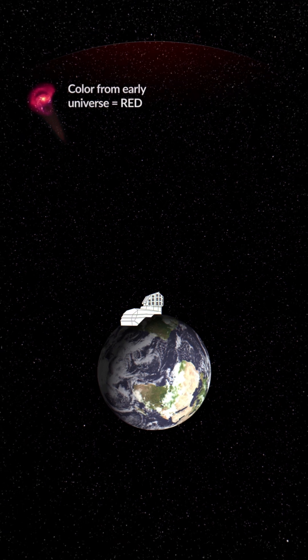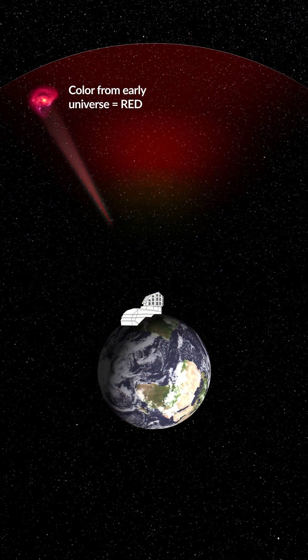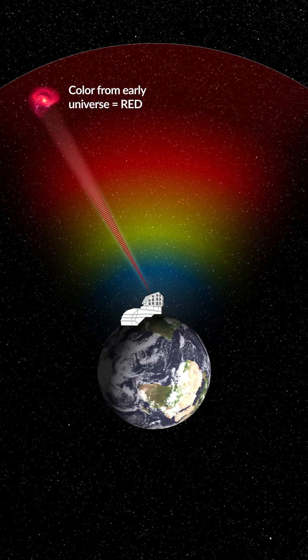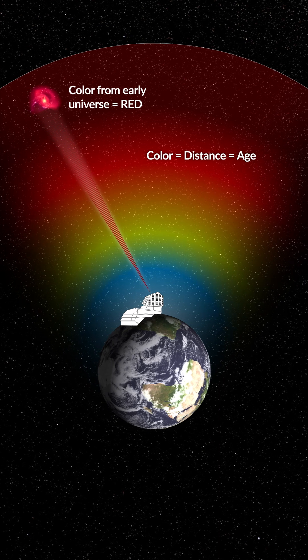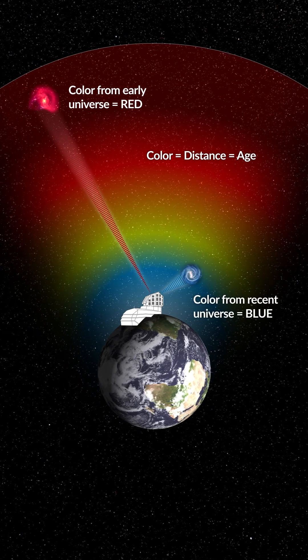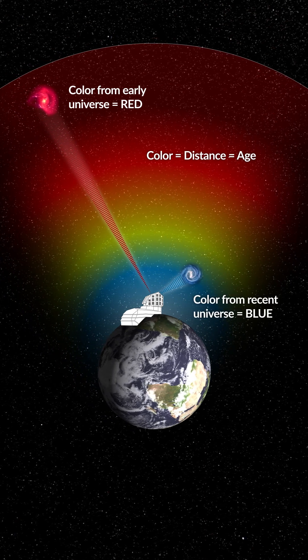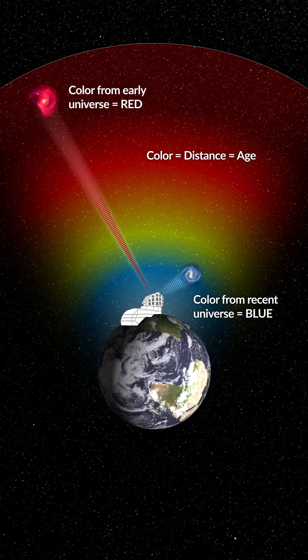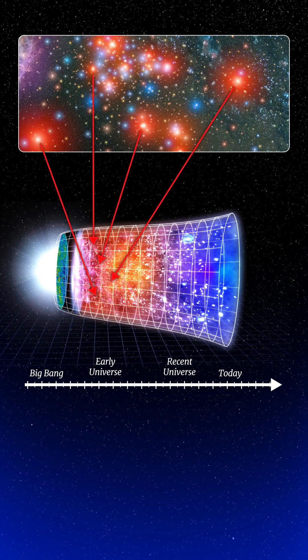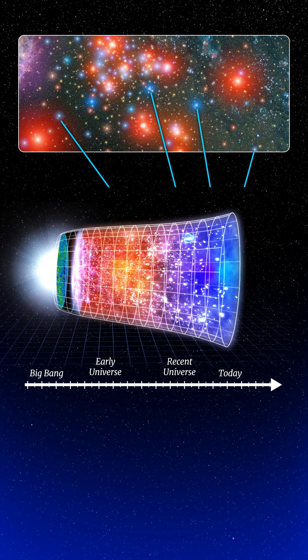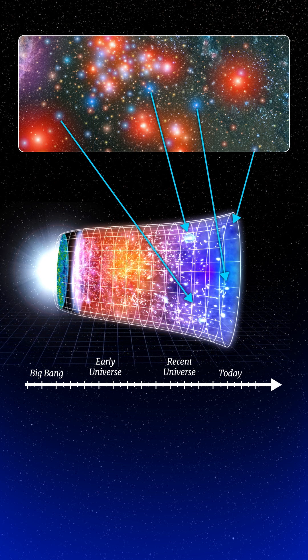This distinction in color gives us a distinction in distance, and also a distinction in age. The objects which are far away from us send us light which took lots of time to come to us. The redder objects correspond to a universe which is in its youth, while the bluer objects correspond to the universe of today. The red objects show us the dynamics of the early universe, and the blue objects the dynamics of the recent universe.